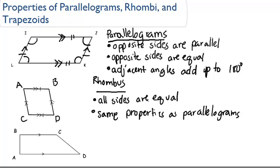So in this case, this side is equal to this side, is equal to this side, is equal to this side. That is the only difference between a rhombus and a parallelogram.